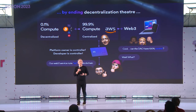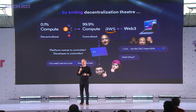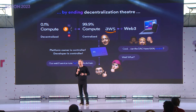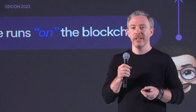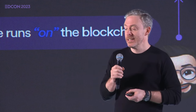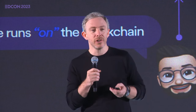We want to end what we might refer to as a kind of decentralization theater, where 99.9% of compute in the Web3 space remains on centralized tech. Here's a typical architecture where Web3 is running on Amazon Web Services. The problem is that the platform owner — Jeff Bezos — is ultimately a controller of the platform. And the developer is also a kind of controller because it's their credit card that's been put into the service, and they can just go in and arbitrarily change data, content, and inject malicious code. That means you can't run that Web3 under the control of a DAO, because a DAO can't control what's running on Amazon Web Services.